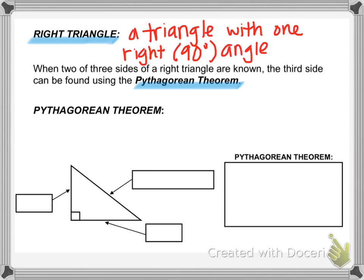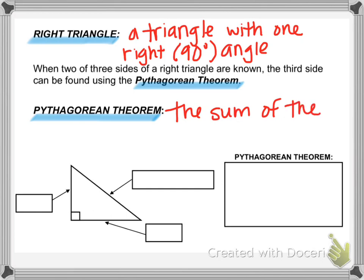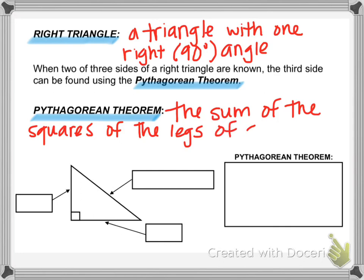So what is the Pythagorean Theorem? The Pythagorean Theorem states that the sum of the squares of the legs of a right triangle equals the square of the hypotenuse.